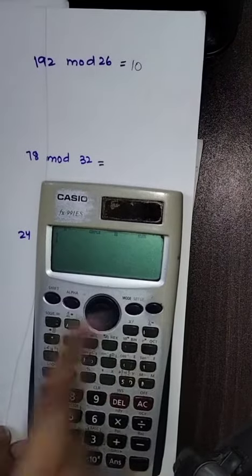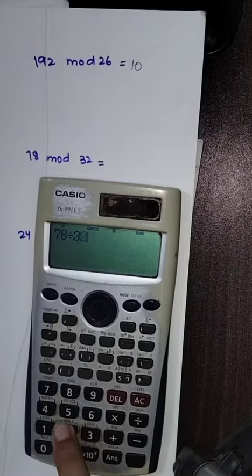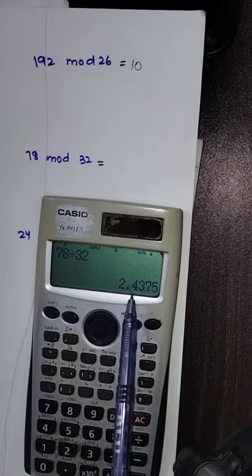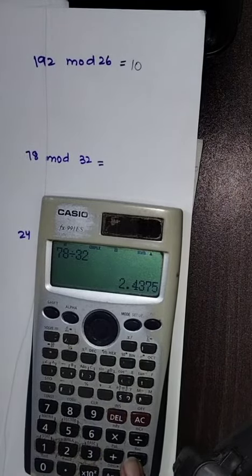Now the second question is 78 mod 32. Repeating the same process, we divide 78 by 32, which is 2.43. We will subtract this 2.43 from the value before the decimal, that is 2.